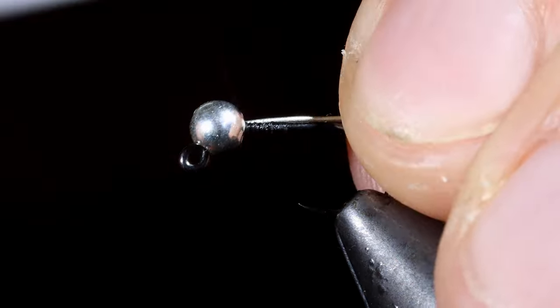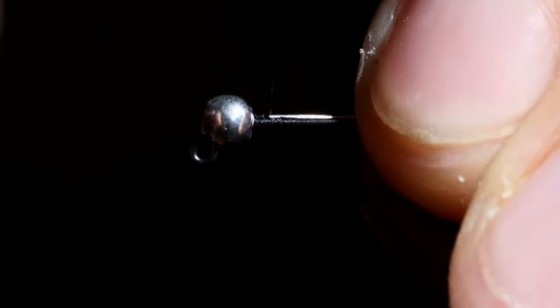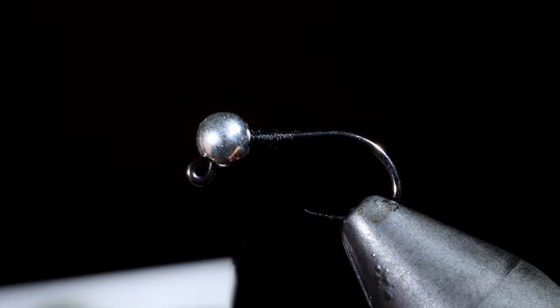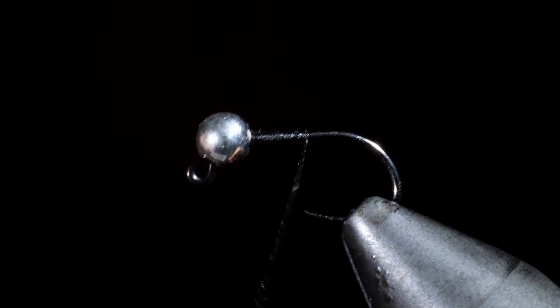We'll then secure our bead in place by inserting a lead-free wire and securing it to the hook shank. Helicopter the excess thread and continue wrapping towards the bend of our hook.